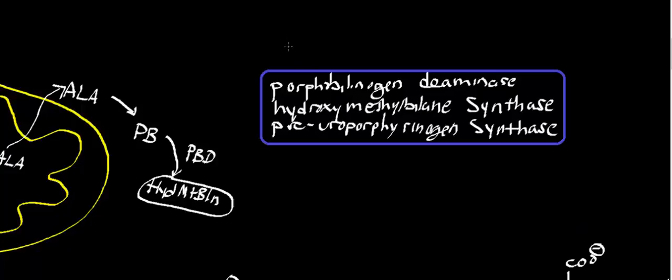This enzyme has three names. Those names are porphobilinogen deaminase, hydroxymethylbilane synthase, and pre-uroporphyrinogen synthase. The first name, porphobilinogen deaminase, is given based on the mechanism of the enzyme. The very first mechanistic step involves a deamination of a molecule from the last video called porphobilinogen.